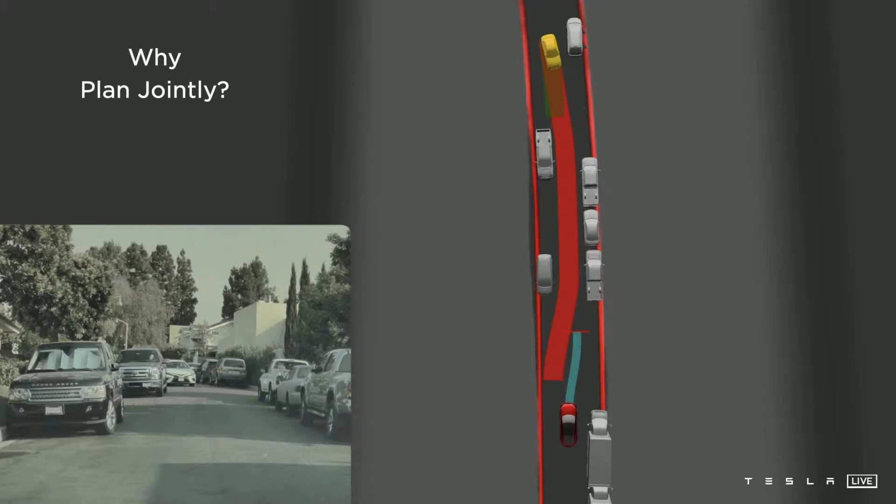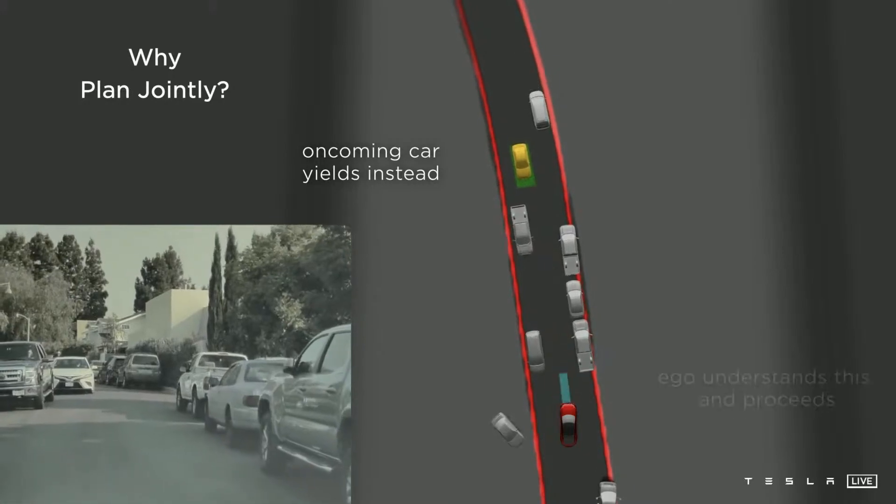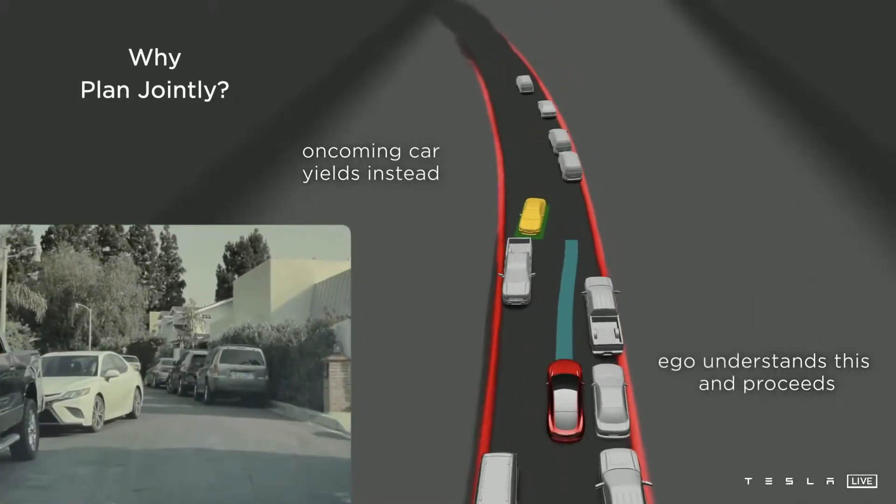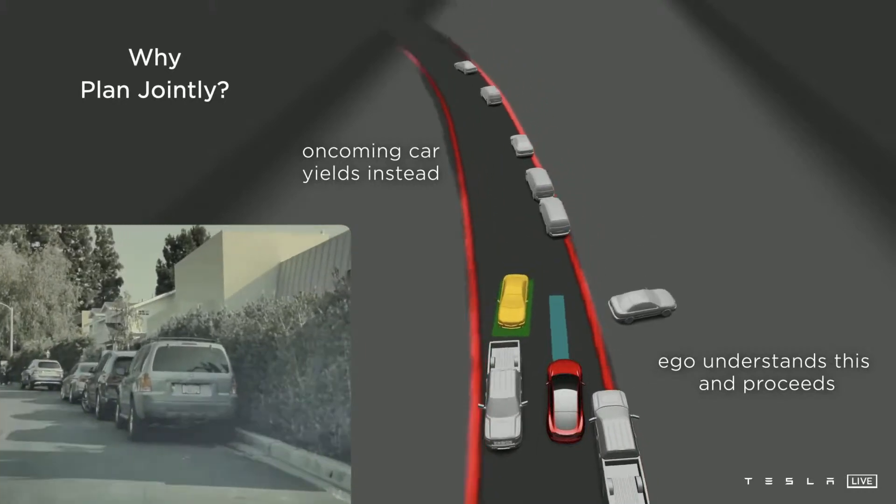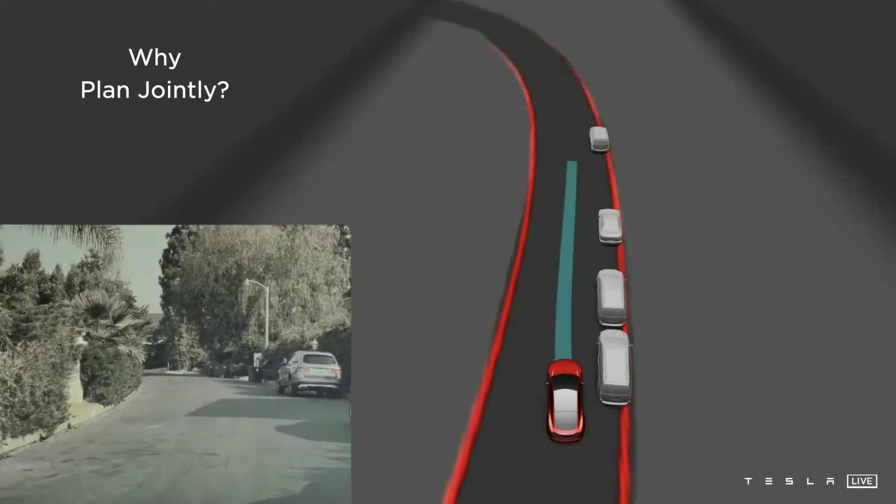So as autopilot is pulling over, we notice that that car has chosen to yield to us based on their yaw rate and their acceleration, and autopilot immediately changes his mind and continues to make progress. This is why we need to plan for everyone, because otherwise we wouldn't know that this person is going to go around the other parked cars and come back to their side. If we didn't do this, autopilot would be too timid and would not be a practical self-driving car.